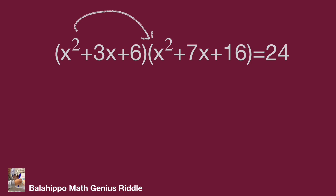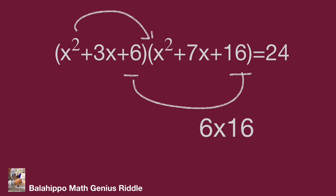We check the numbers 6 and 16. When we expand them, 6 times 16 equals 96, which is not equal to 24. So we cannot reduce by setting x equal to 0. So we have a problem.